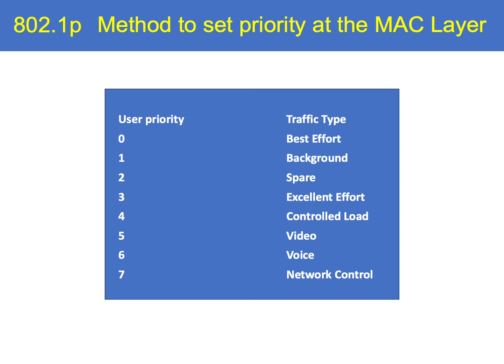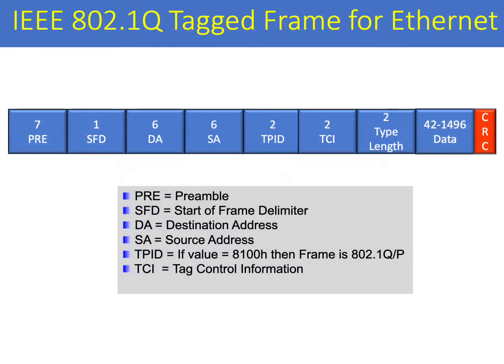Now let's take a look at the VLAN tag and 802.1p/802.1q in a little more detail. Here we have an example of an 802.1q tagged frame for Ethernet. We begin with the preamble, followed by the start frame delimiter, a destination address, a source address, and a tagged protocol identifier (TPID). The value here, if we're running with an 802.1q/p type frame, is going to be 0x8100. Then we have the tag control information, where the VLAN identity — 12 bits — and the prioritization — 3 bits — are located.